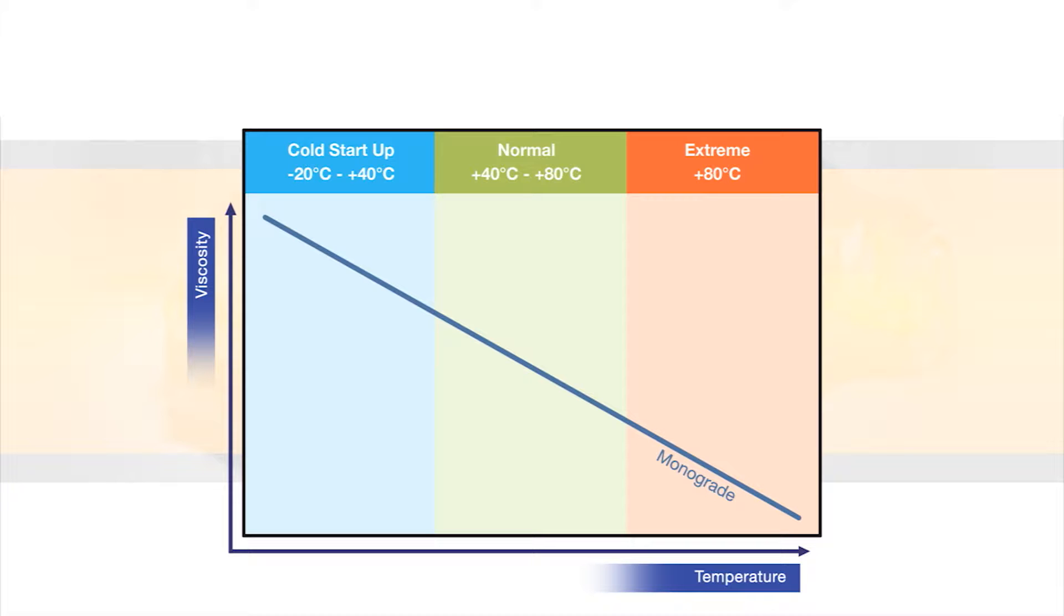This rate of change is called the viscosity index. A multi-grade oil does a better job of maintaining viscosity across the temperature range, but there's still a viscosity difference from the low to high temperatures.